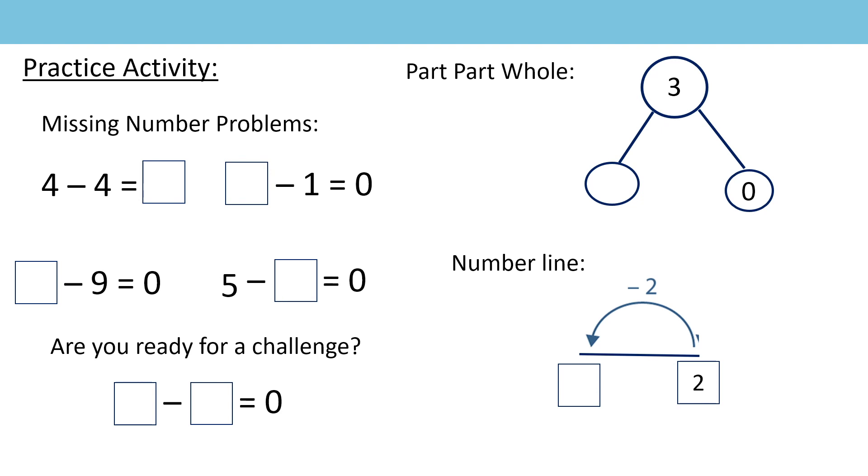Let's go through the answers. Four subtract four equals zero. What would the missing number be if I subtract one and end up with zero? The missing number will be one. What would the missing number be if I subtract nine and have a difference of zero? The missing number will be nine. What would the missing number be if I have five and I subtract something to have a difference of zero? The missing number will be five. In my part whole model, I have three as the whole. Part is zero, so the other part must be three. In the number line, I have two. I've subtracted two, so I will have zero. Well done, everybody.